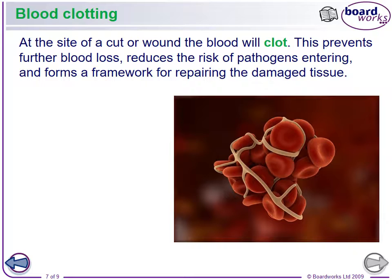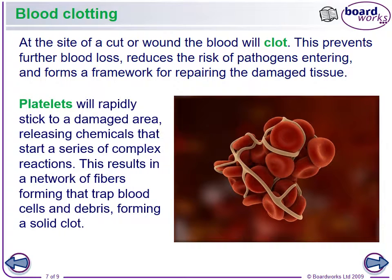Now, blood clotting. When you have a wound or cut, the blood is going to want to clot to help reduce blood loss, keep pathogens from entering, and form the framework for repairing damaged tissue. Platelets are sticky — like a spider's web — they release chemicals that start a cascade of reactions, creating a network of fibers that trap blood cells and debris and help form a clot, building up a barrier to keep pathogens out as fast as possible.